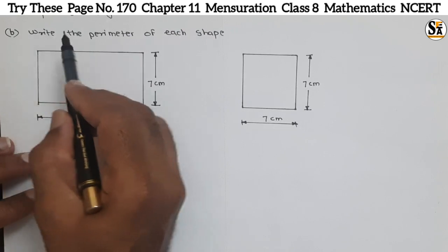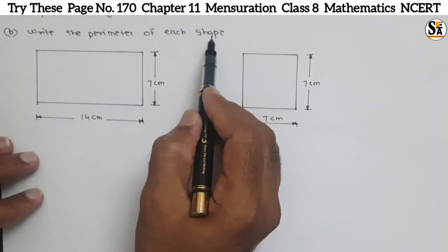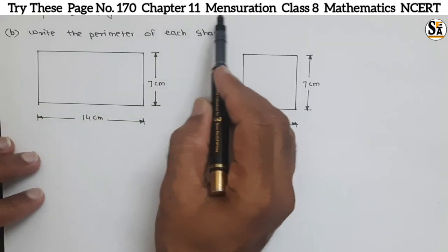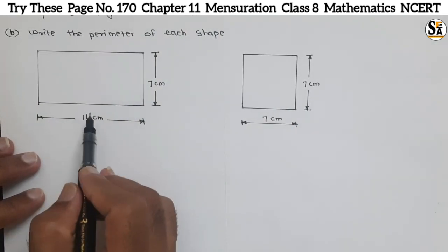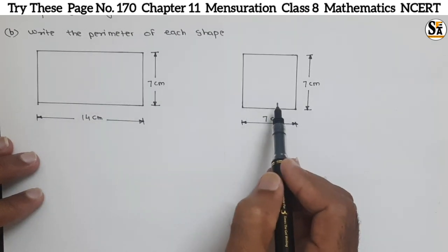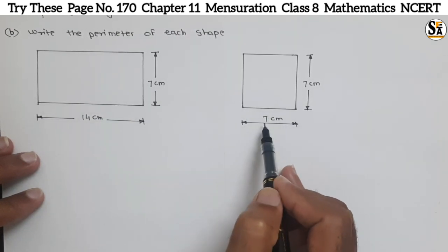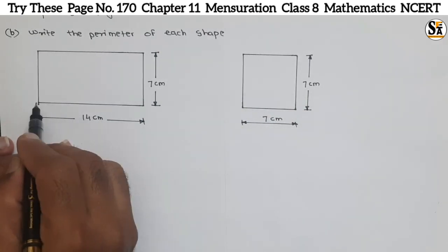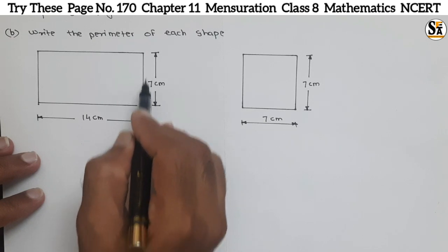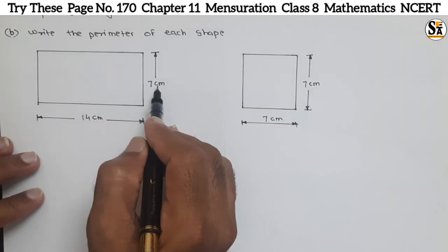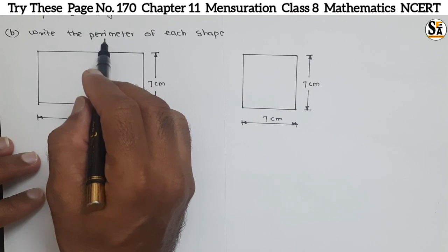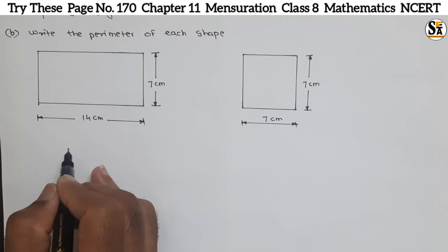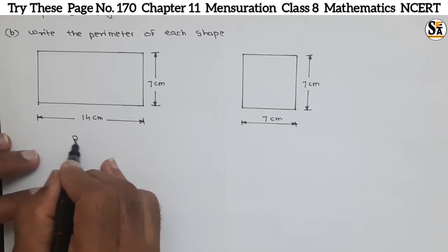Now see part B: write the perimeter of each shape. This question is also under the 'Try This' section, page number 170, chapter Mensuration. In part B, a rectangle is given and a square is given. It is a square because all sides are equal. It is a rectangle because one side is 14 centimeters and the other side is 7 centimeters. We need to calculate the perimeter.